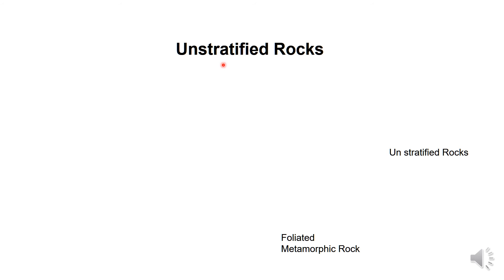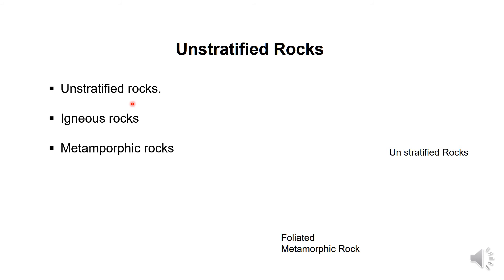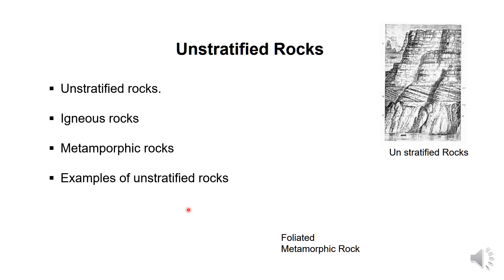Unstratified rocks are rocks which do not show signs of stratification and cannot be easily split into thin slabs or layers. Unstratified rocks include granite, basalt, and limestone trap. Metamorphic rocks may be either stratified or unstratified. Examples of unstratified rocks are granite, basalt, and lime trap. Unstratified rocks usually do not have stratification lines — they appear in one uniform form.